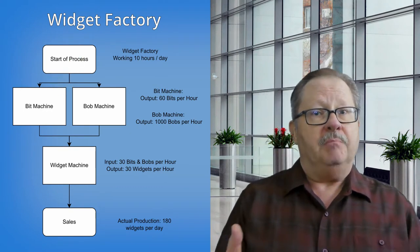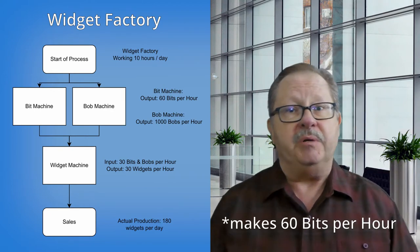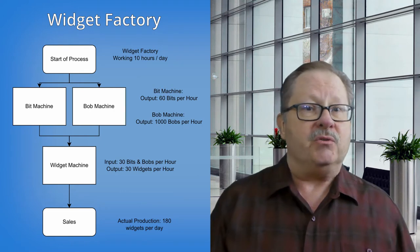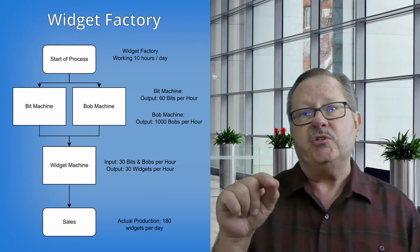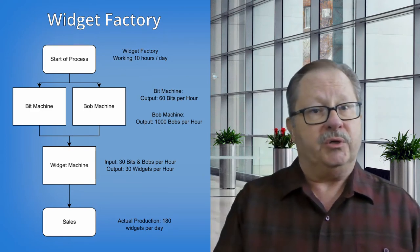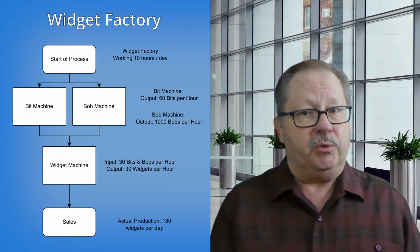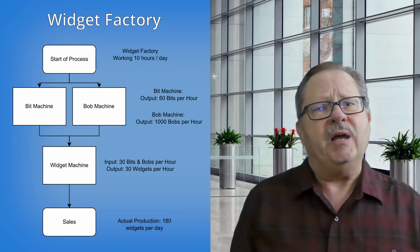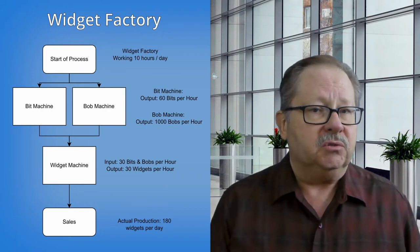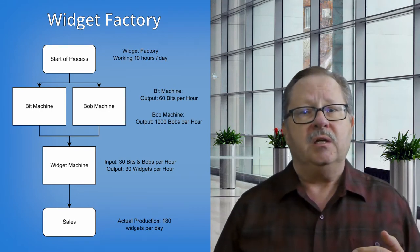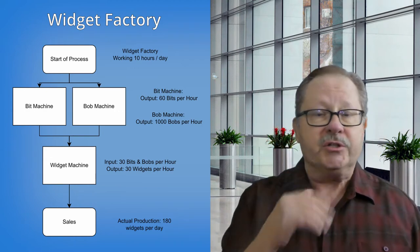Okay, so step one is to identify our first constraint. We see we have three machines in this factory: a bit machine, a bob machine, and a widget machine. The bit machine makes 600 bits per hour. The bob machine makes a thousand bobs per hour, more than what we need. The widget machine uses 30 bits and 30 bobs per hour. The output, of course, would then be 30 widgets per hour. However, right now the factory is creating around 180 widgets per day when you would expect 300. So it's far below expectations. It looks like the widget machine is the slowest step in the process. So let's call it our first constraint.